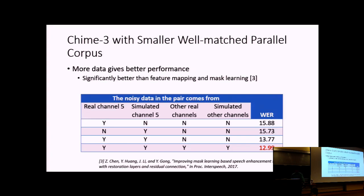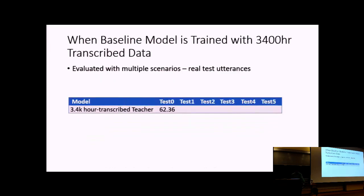There are also other methods using parallel data, such as feature mapping or mask learning at the feature level followed by retraining the model. We have another paper at Interspeech 2017 comparing these approaches, finding that TS learning is much better than those techniques because it directly targets the final recognition objective.